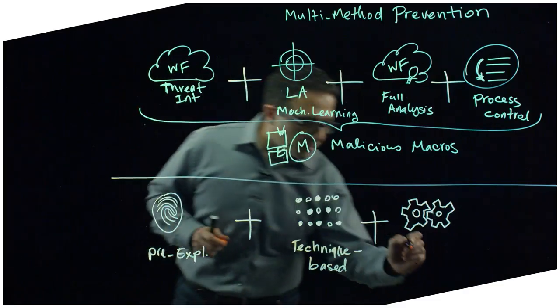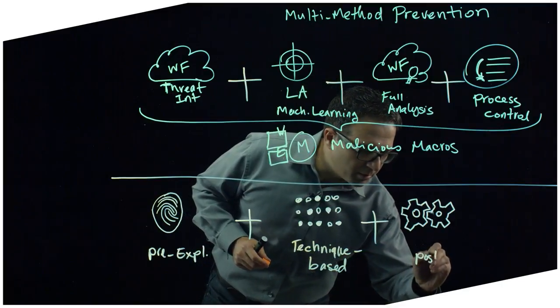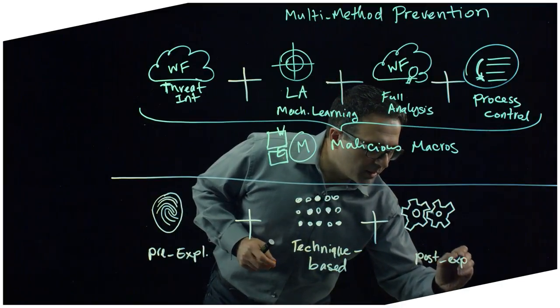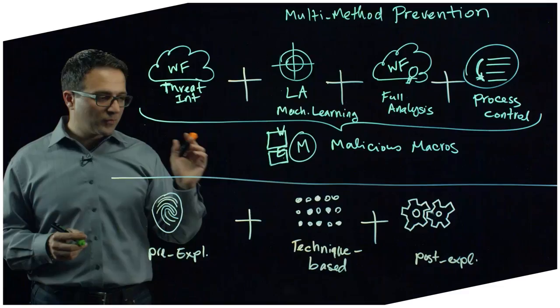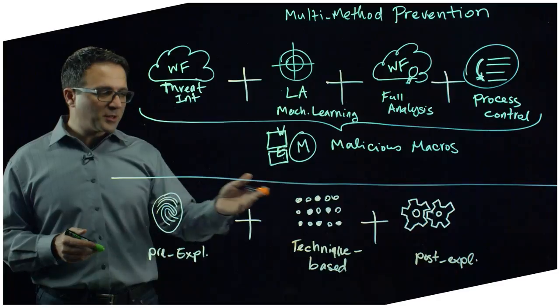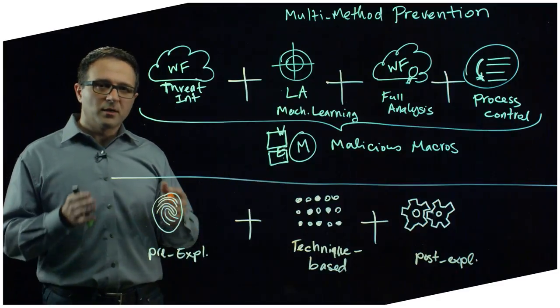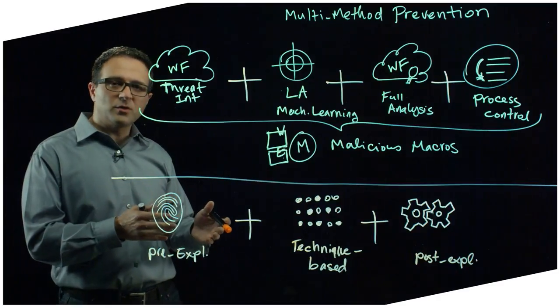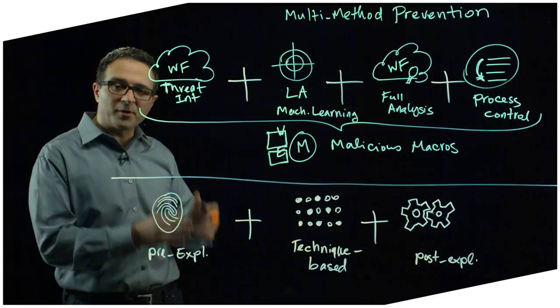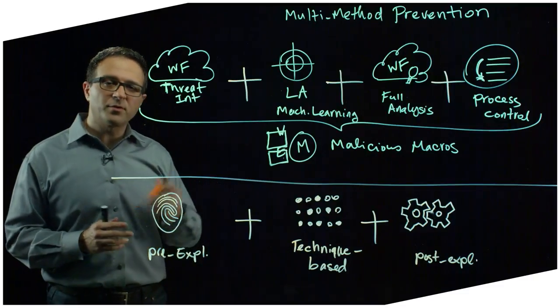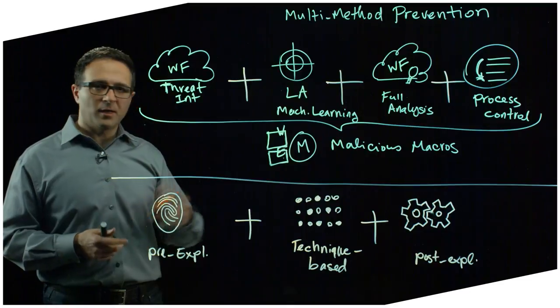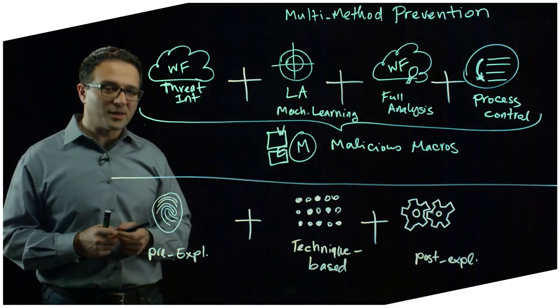Last but not least, we have the ability to prevent post-exploitation, meaning when an endpoint has been compromised and the attacker is trying to escalate their privileges or maybe this is a type of attack that's trying to compromise the operating system itself. We have the capability to identify both those types of attacks and stop them before they can actually compromise an endpoint.